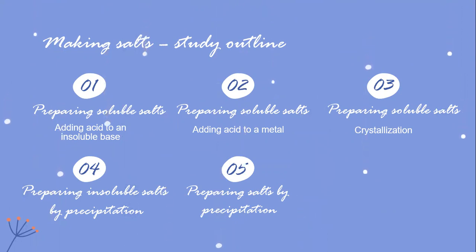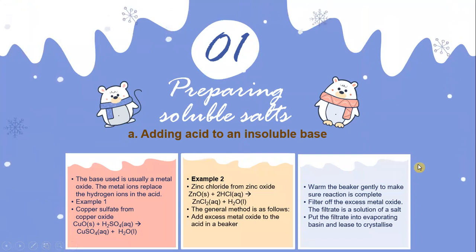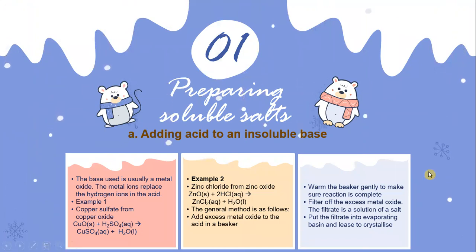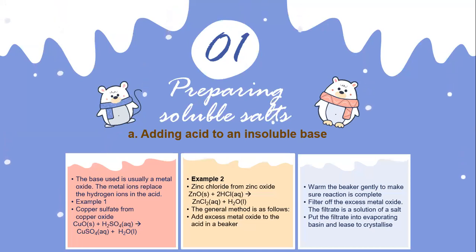Preparing soluble salts by adding acid to an insoluble base — the base used is usually a metal oxide. The metal ions replace the hydrogen ions in the acid. Example 1: copper sulfate from copper oxide. The equation is CuO (solid) + H2SO4 (aqueous) → CuSO4 + H2O.